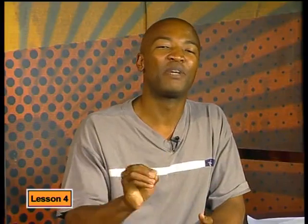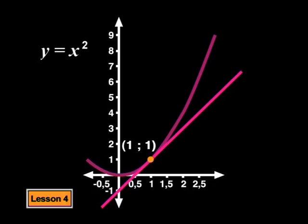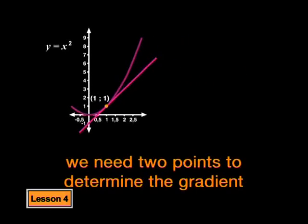Let's pick up where we left off. Last time we said we wanted to determine the gradient of the tangent to this graph of y equals x squared at the point (1,1) — in other words, the gradient of this line here. But we discovered that this was pretty hard to do because we need two points to find a gradient and we only really have one. So, like those mathematicians a long time ago, I suggested that we find the gradient of another line, an approximation to the line we are interested in.